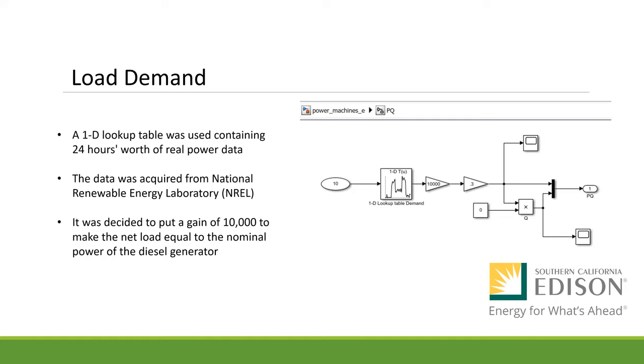Subsystem is the load demand. Another 1D lookup table was used containing 24 hours worth of real power data. The data was acquired from the National Renewable Energy Laboratory, better known as NREL. It was decided to put a gain of 10,000 to make the net load equal to the nominal power of the diesel generator.